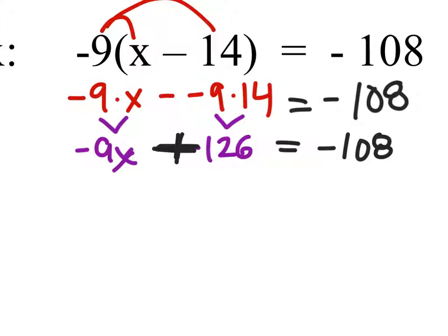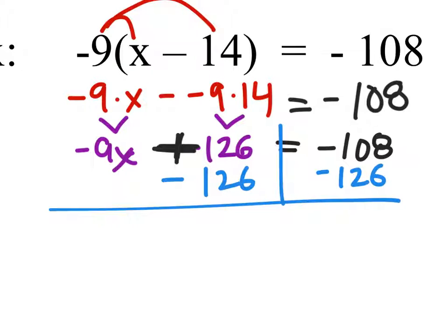So from here, we need all of the x's by themselves. So we need to get rid of that plus 126 by subtracting 126 on both sides. And what this does is it gets rid of that 126 by making it a 0.